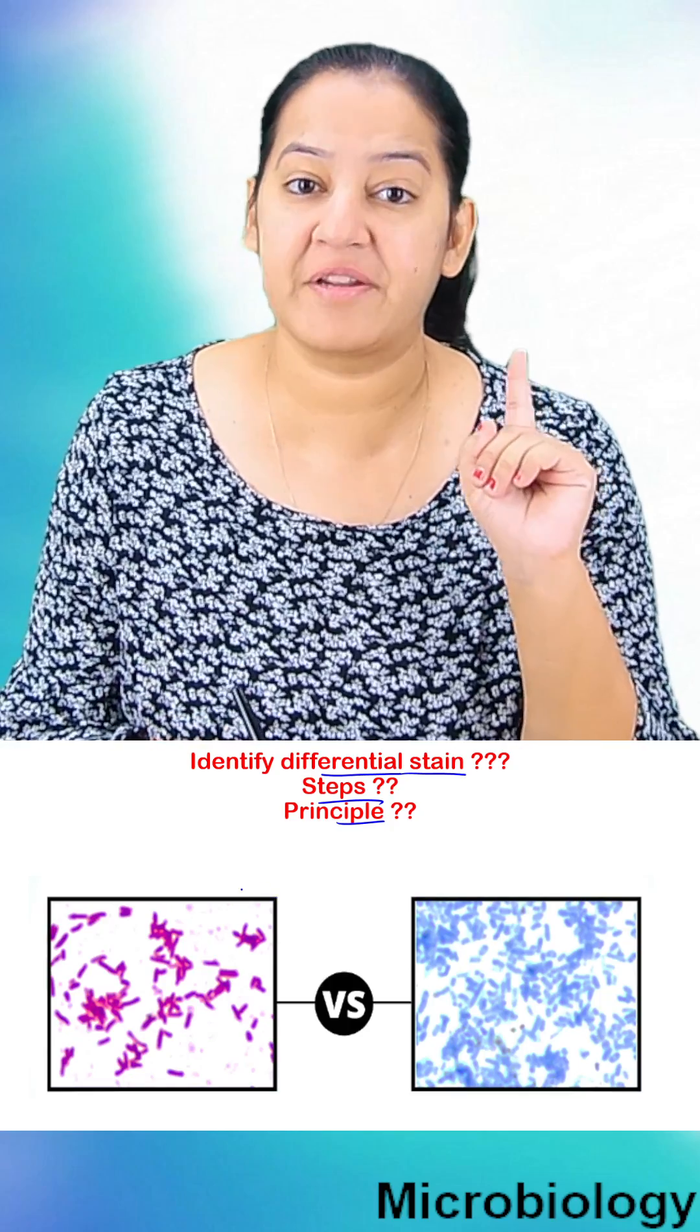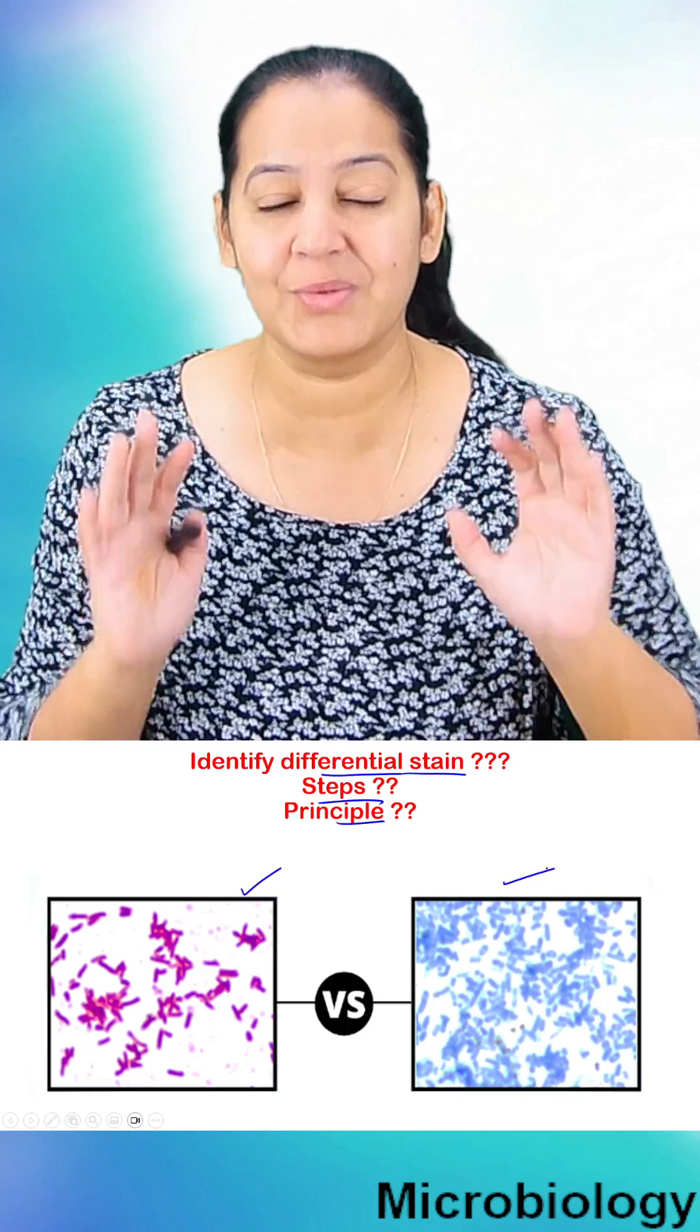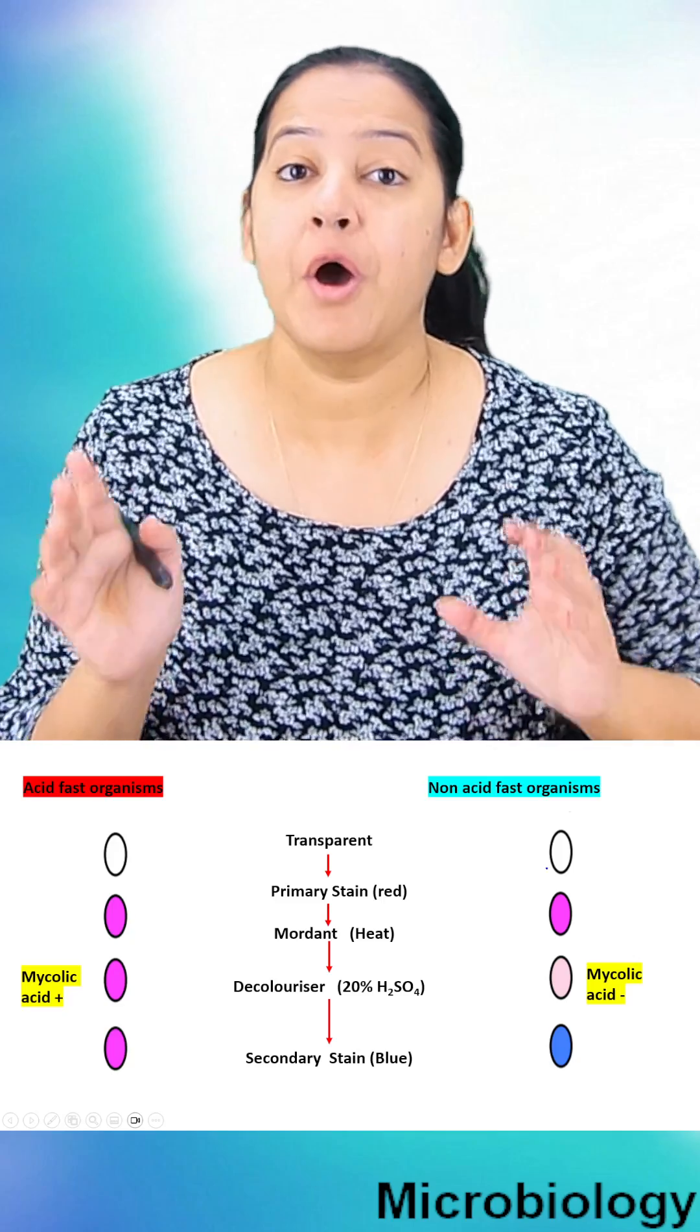In this image we can see some bacteria are red in color, some are blue in color. So this stain is acid-fast stain or ZN stain.